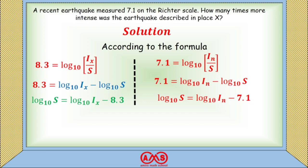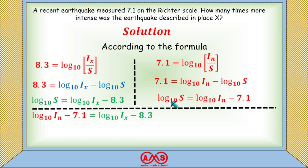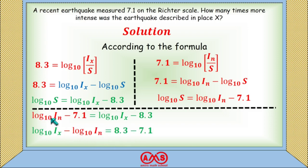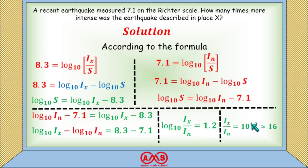We want to find the ratio of I_X to I_N. Setting the two expressions for log₁₀(S) equal: log₁₀(I_N) − 7.1 = log₁₀(I_X) − 8.3. After simplification, log₁₀(I_X / I_N) = 1.2, so I_X / I_N = 10^1.2 ≈ 16. The earthquake at place X was 16 times more intense than the 7.1 magnitude earthquake.